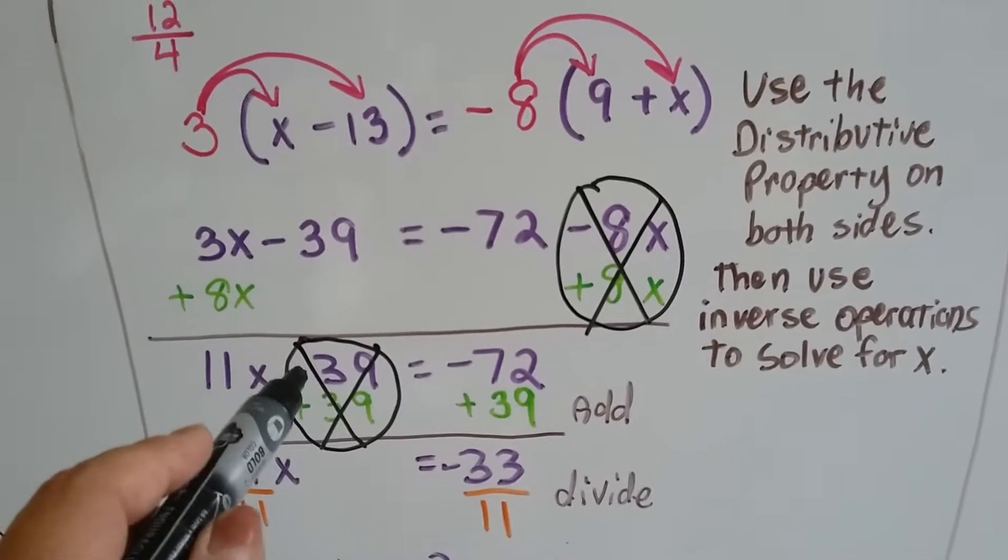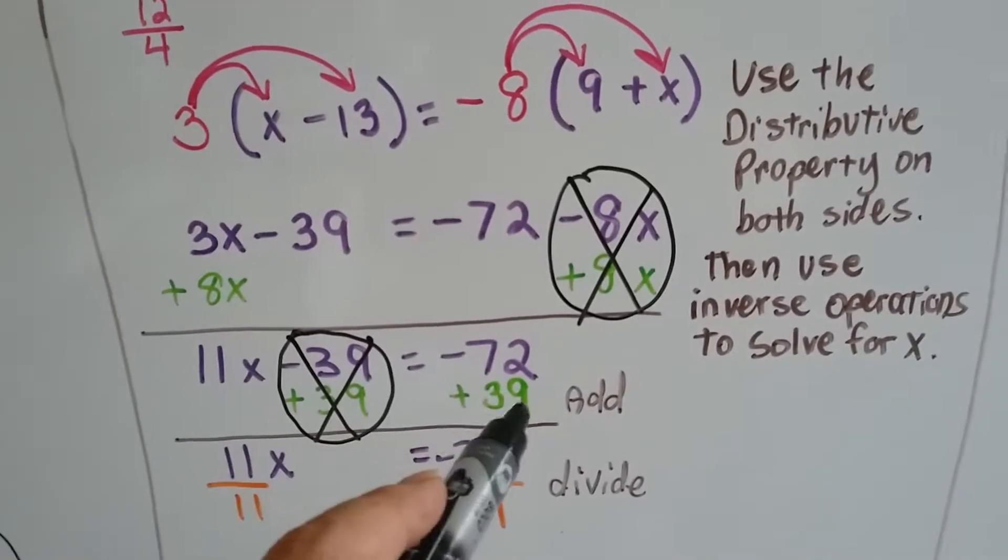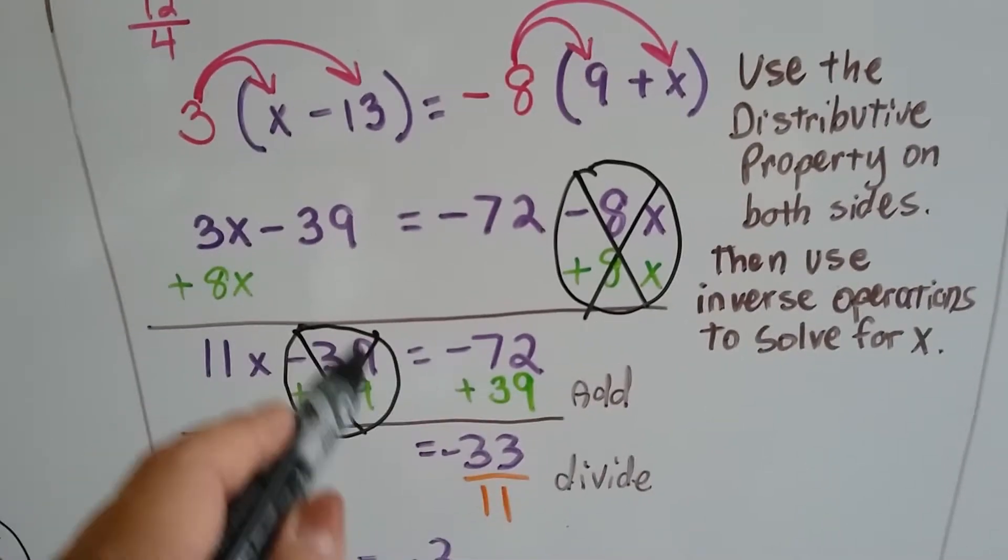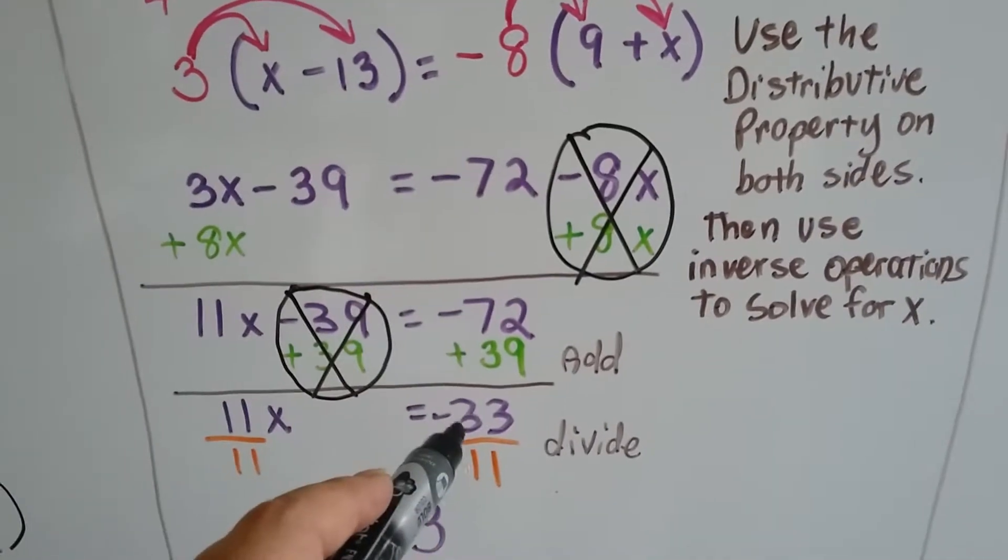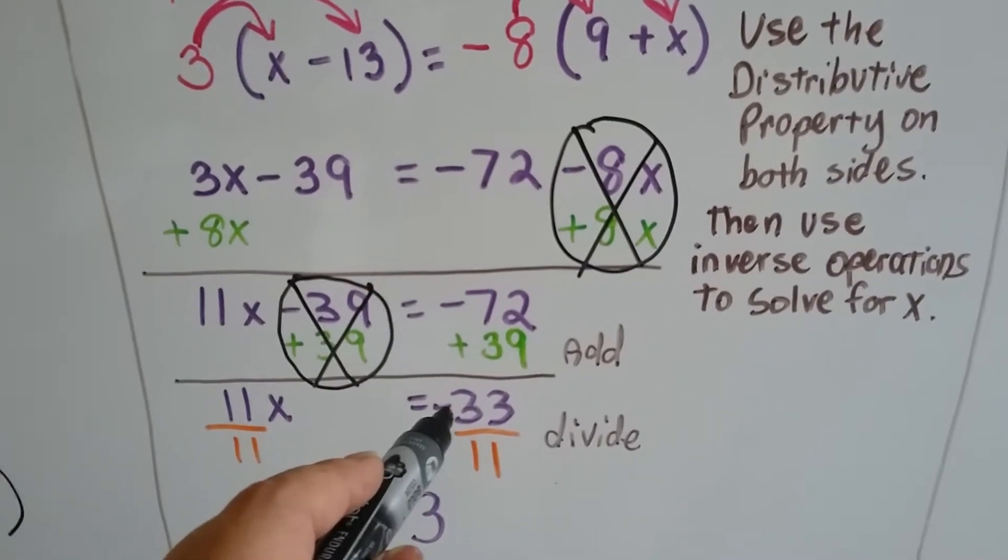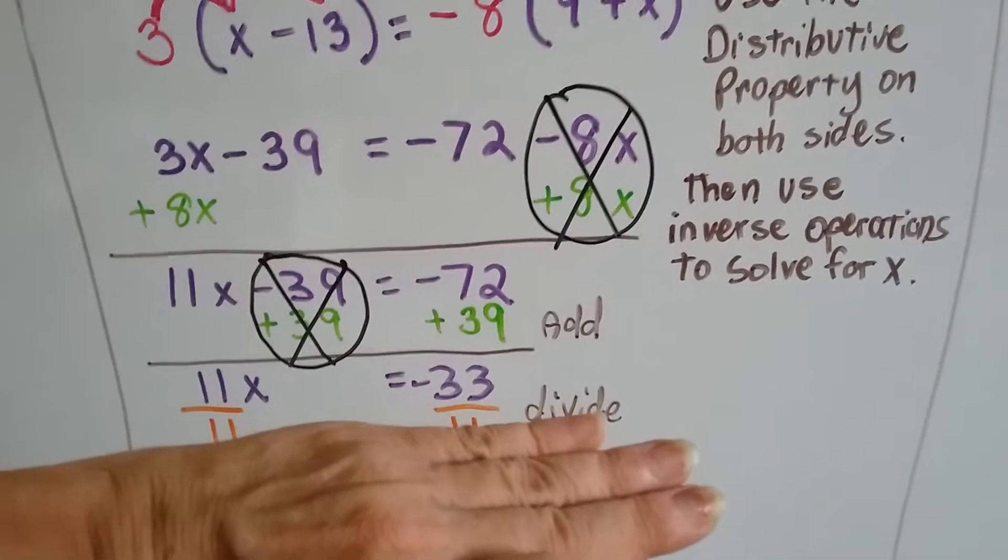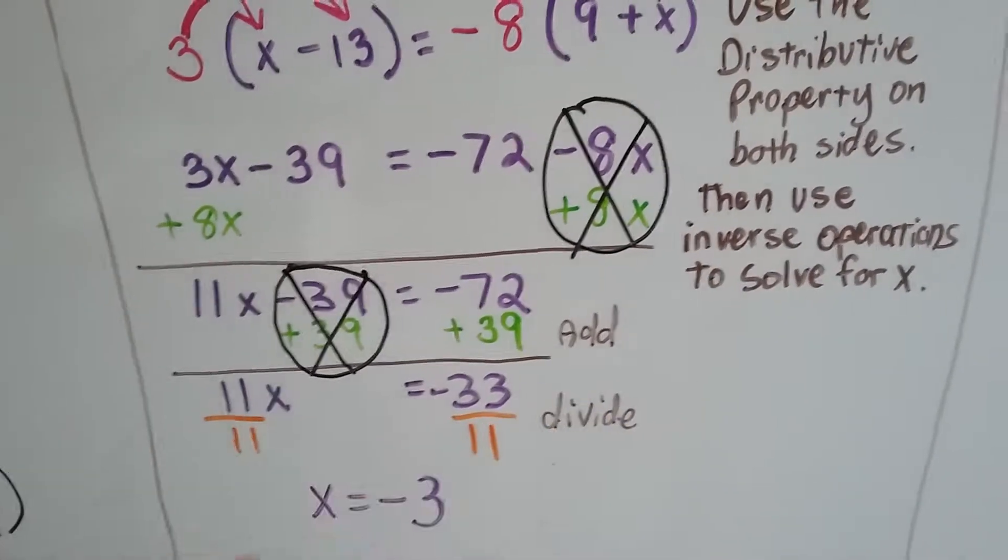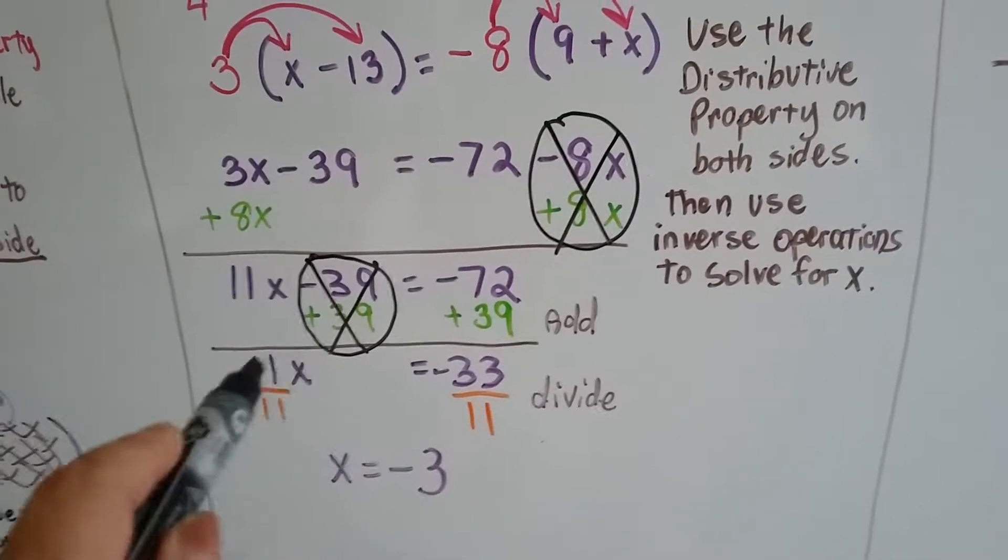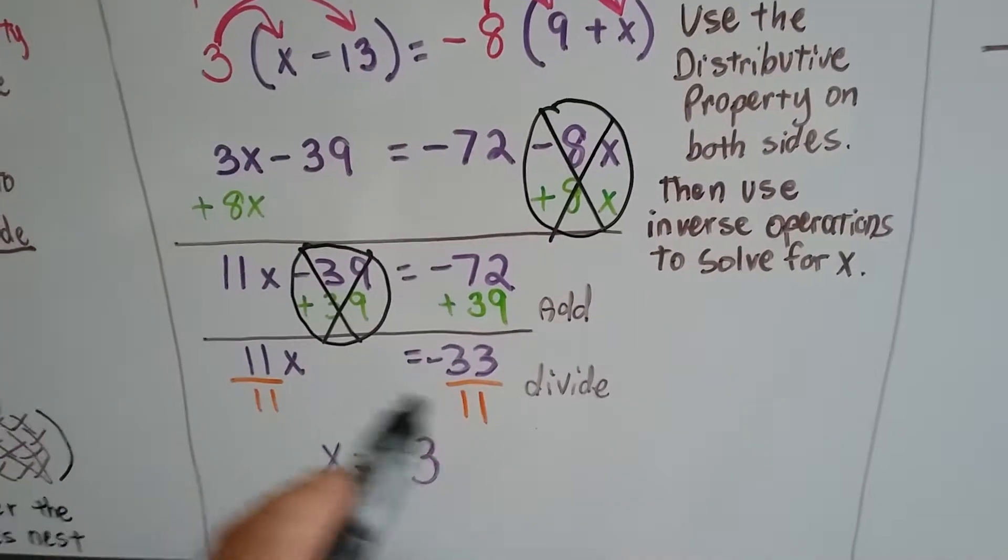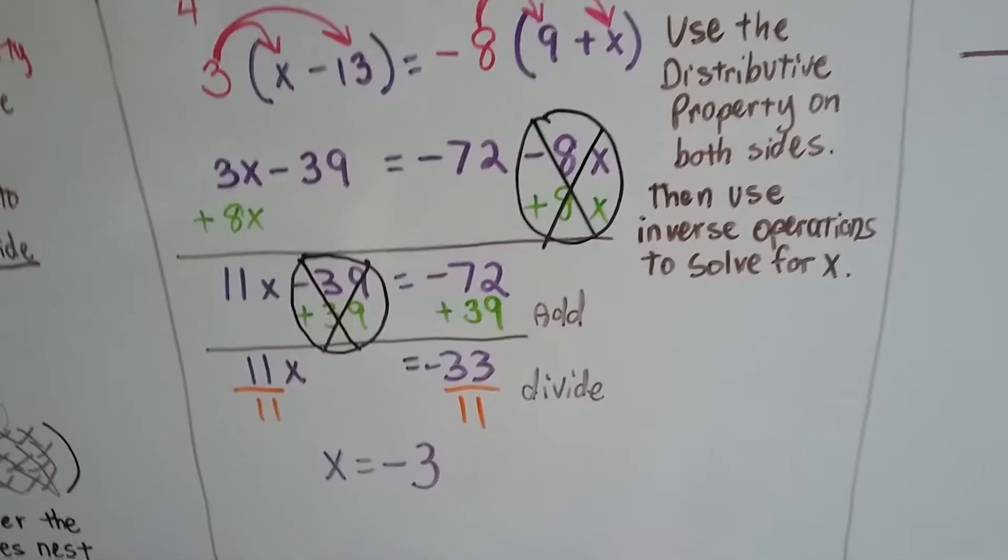Now we need to eliminate this negative 39 to try to get this x by itself. I added 39 to both sides. They annihilate this one, and we added 39 to this side to this negative 72, and it didn't quite get us to 0, but it got us closer. We're at negative 33. Now we've got 11x equals negative 33. Now it's time to divide, get that x by itself. We divide both sides by 11. Negative 33 divided by 11 is negative 3. That's what x equals.